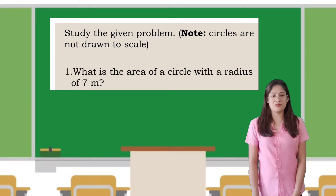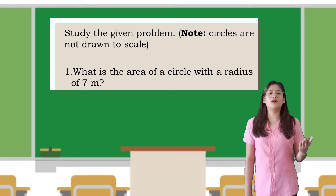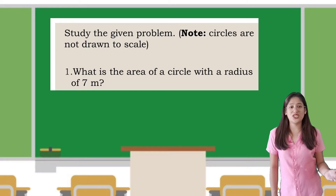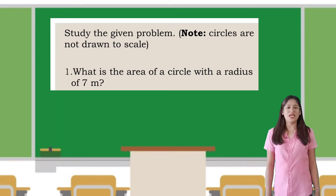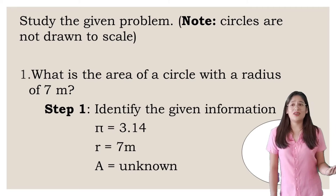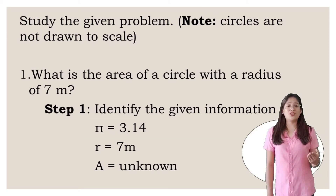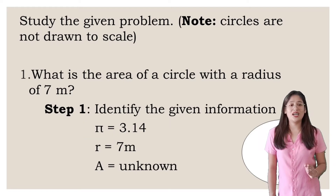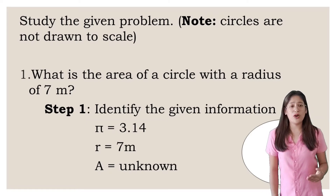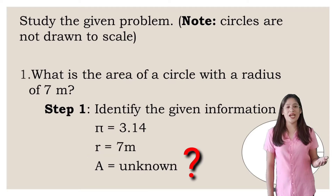Let's study the given problem. Number 1: What is the area of a circle with a radius of 7 meters? The given is radius which is 7 meters. Step 1, we will identify the given information. Like on the first example, pi is always constant — even though hindi binabanggit sa problem, ay lagi nandyan — which is equivalent to 3.14. And then the radius is equals to 7 meters. The area is unknown.